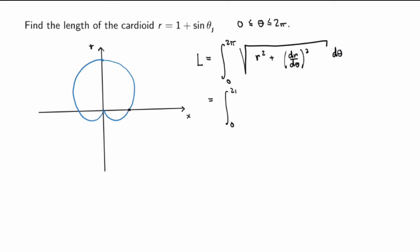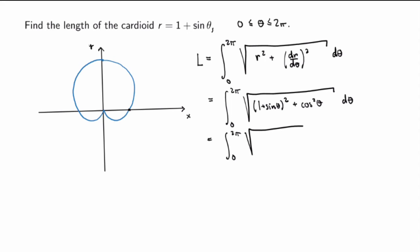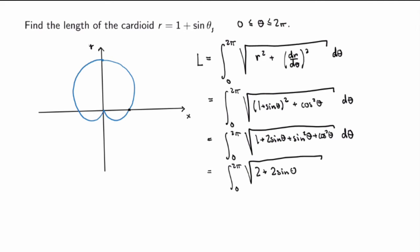Using our formula, the length is the integral from 0 to 2π of √(r² + (dr/dθ)²) dθ. Substituting r = 1 + sinθ, we get r² = (1 + sinθ)² and dr/dθ = cosθ, so we add cos²θ. Expanding the square gives 1 + 2sinθ + sin²θ + cos²θ, and since sin²θ + cos²θ = 1, this simplifies to √(2 + 2sinθ) dθ. Evaluating that integral gives a final result of exactly 8.